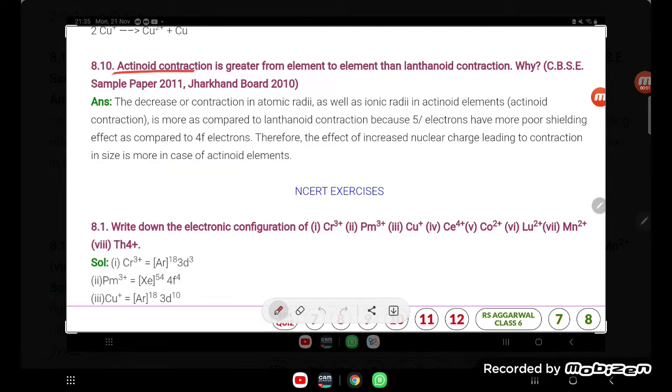Actinoid contraction is greater from element to element than lanthanoid contraction. This is from CBSE 2011 and 2010. So, actinoid contraction is greater. What can be the answer, children?